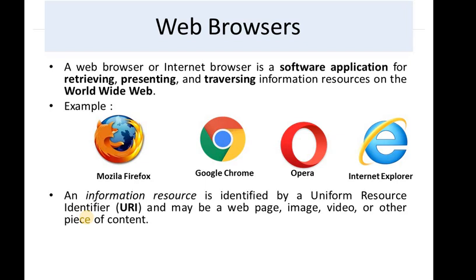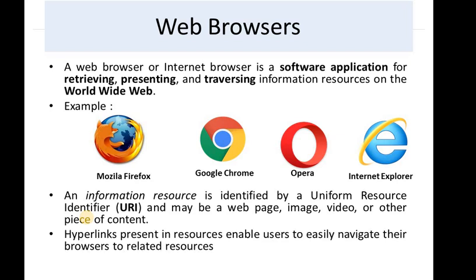Now, whatever you want from www, you can get it using its URI. Whenever you search for a URI, you get it in your web browser and it will be displayed there. A hyperlink represents a resource and enables users to easily navigate their browser to related resources.